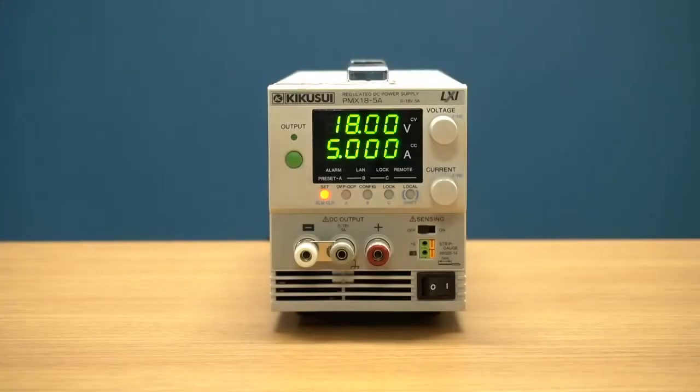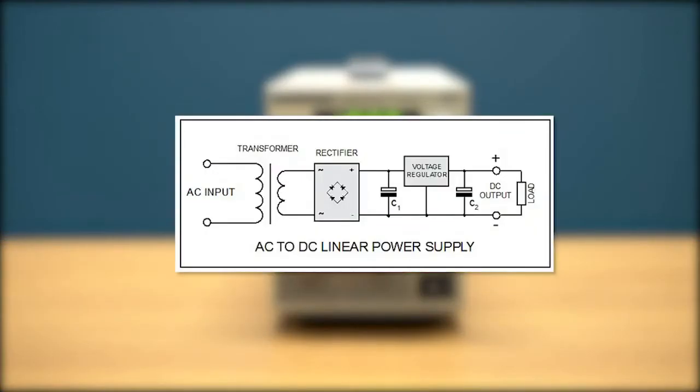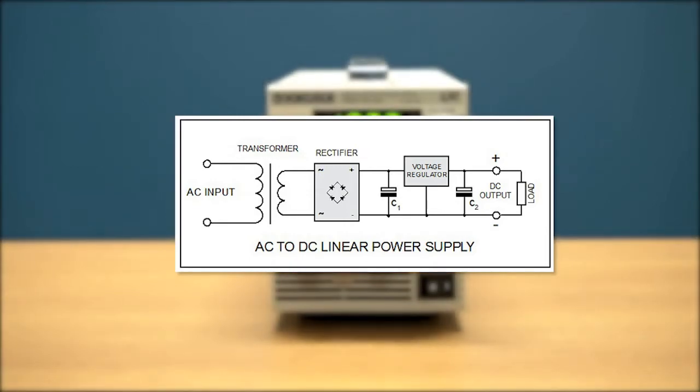Linear power supplies, like the PMXA, utilize a transformer to drop voltage from the AC line to a much lower AC voltage, then use a series of rectifier circuitry and filtering processes to produce a very clean DC voltage.